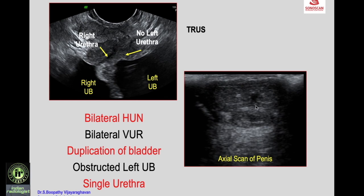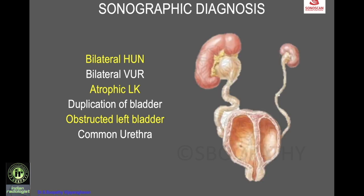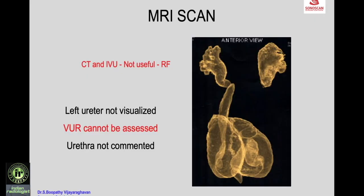Transverse scan of the penis shows the corpora cavernosa and corpus spongiosum with a single urethra. On ultrasound: bilateral hydroureteronephrosis, bilateral vesicoureteric reflux, duplication of the bladder with obstructed left bladder, and a single urethra — giving the complete diagnosis of bilateral hydroureteronephrosis, bilateral VUR, atrophic left kidney, duplication of the bladder with obstructed left bladder and a common urethra.